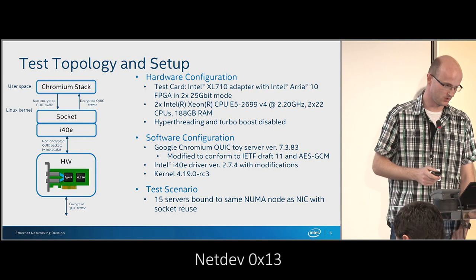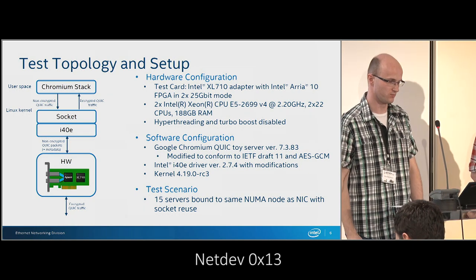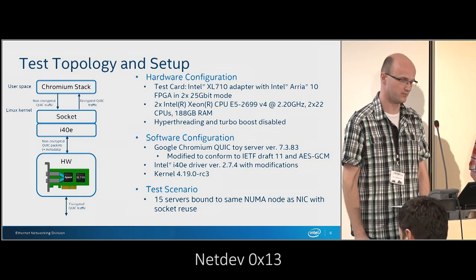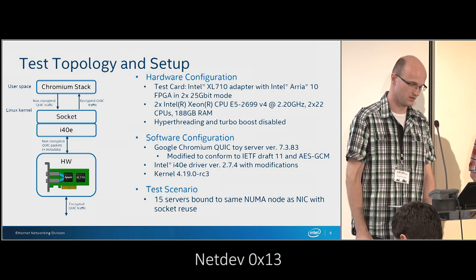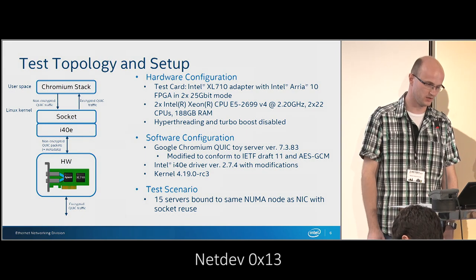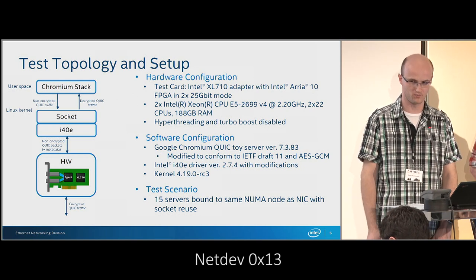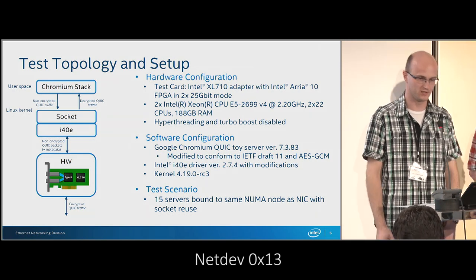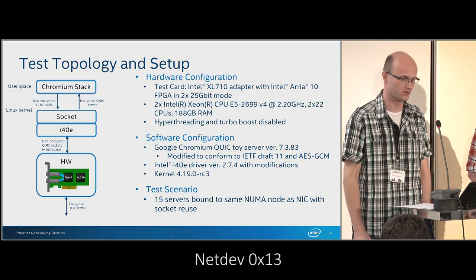A couple of words about our test topology. We used the QUIC toy stack that is part of Google's Chromium project. The toy stack is not really designed for performance and scalability and runs only on a single thread, so we had to hack it a bit to show any results and scale it up. We used socket reuse port and socket reuse address to allow running more than one instance of the QUIC server on the same UDP port, since our hardware supports one port for now. We used RSS to spread connections between servers.